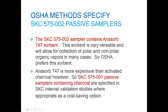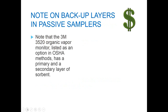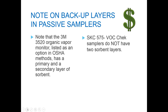The SKC 575-002 sampler contains Anasorb 747, which is a carbon-based sorbent. It is very versatile — it allows for the collection of both polar and many non-polar compounds, which is why OSHA specifies this particular badge in their methods. Anasorb 747, however, is more expensive than plain coconut shell activated charcoal. So the SKC 575-001 samplers are specified in SKC internal validations where appropriate, as this is a more cost-saving option for users.